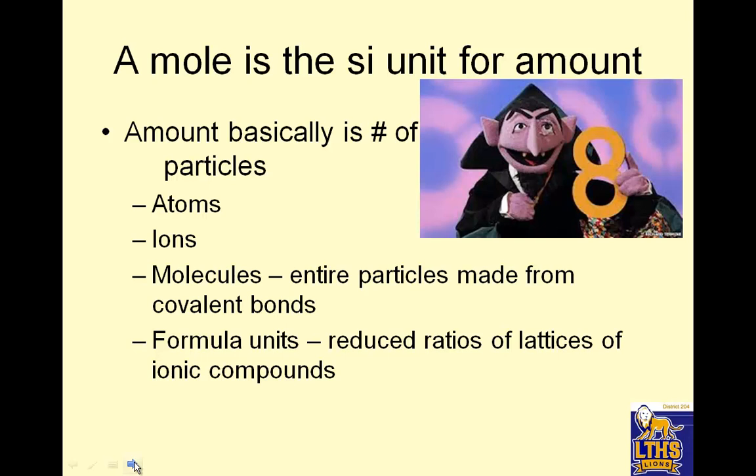A mole is a unit for amount. Amount basically is the number of particles. These can be atoms, which would come from elements. Ions, which are anything with a charge, like Na positive or acetate C2H3O2 negative. Molecules are entire particles made of covalent bonds like water. Formula units are reduced ratios of lattices of ionic compounds. They come in cubes but then they repeat and do it over and over again.